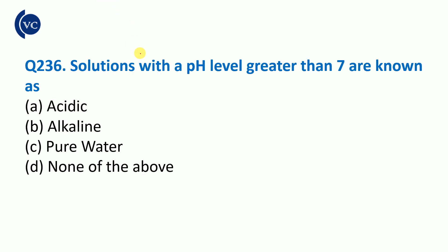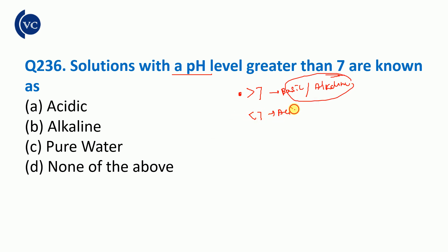Next question: a solution with pH greater than 7 — we have previously discussed this. Where pH is greater than 7, the solution is basic in nature. We also call it alkaline. Where pH is less than 7, it is acidic. So if pH is greater than 7, the right answer is alkaline.